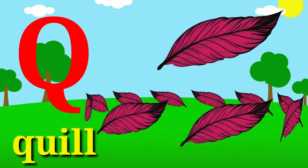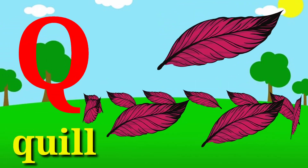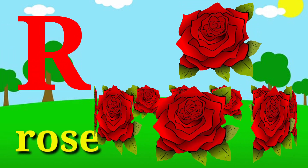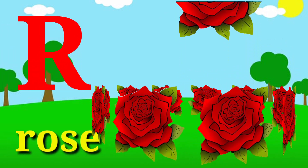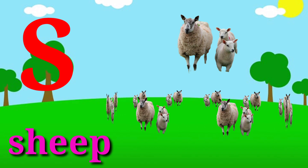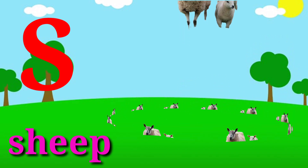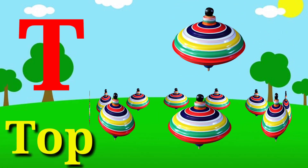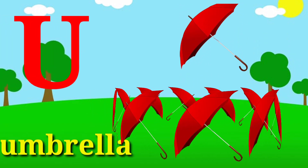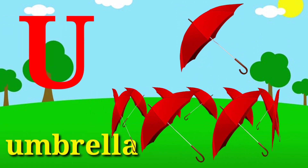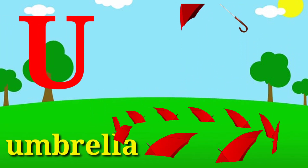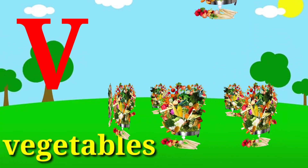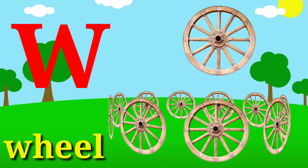R for Rose. S for Sheep. T for Top. U for Umbrella. V for Vegetables.